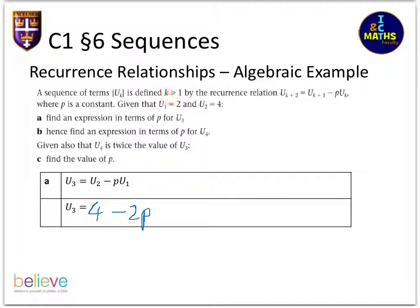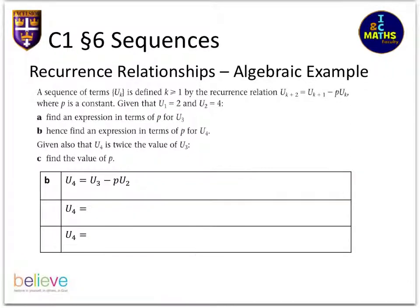There you can see u2 which was four, and take away p times u1, and u1 is two, two times p, there you go. We're going to do part b now and part b is asking us to find an expression for u4. Again using this same formula, u4 will be u3 take away p lots of u2. I wrote that at the top there. Now I just need to fill in the values that I know. So u3 is what I worked out for part a, and u2 I've been given that up here.